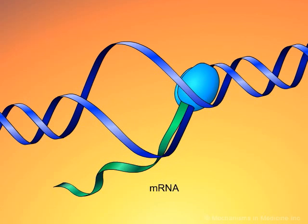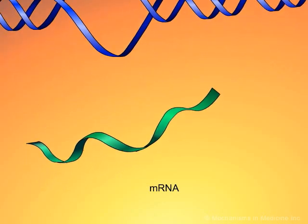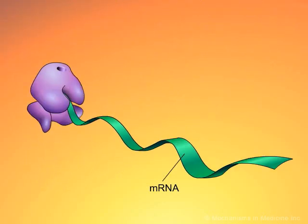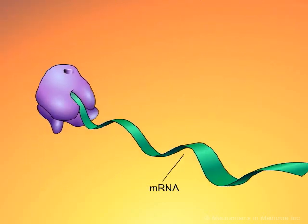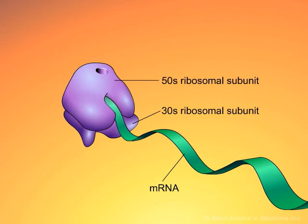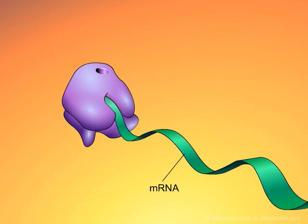Once the strand of mRNA is complete, it will detach from the DNA template and in turn become attached to ribosomes. Bacterial ribosomes are made of a small 30S and a large 50S subunit. After the two subunits join together around the strand of mRNA, synthesis of the polypeptide chain begins.